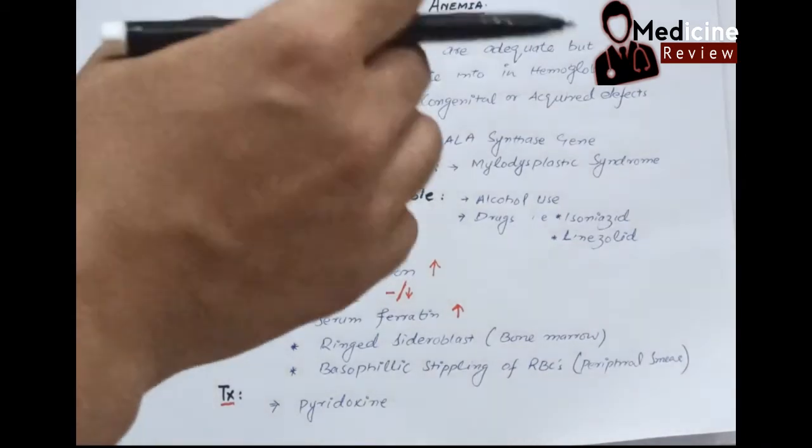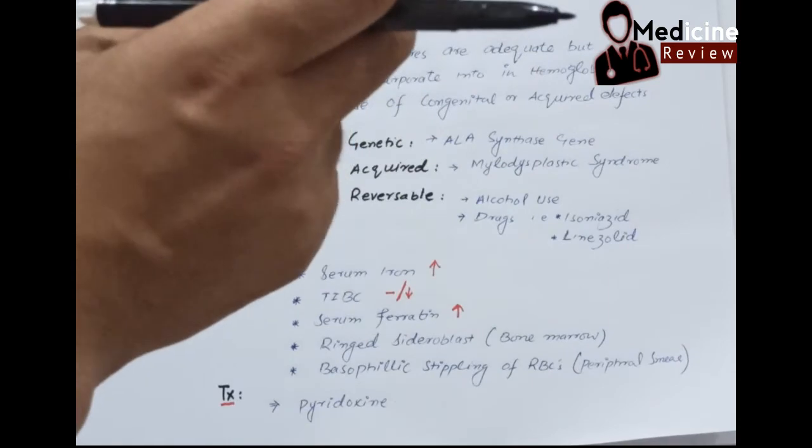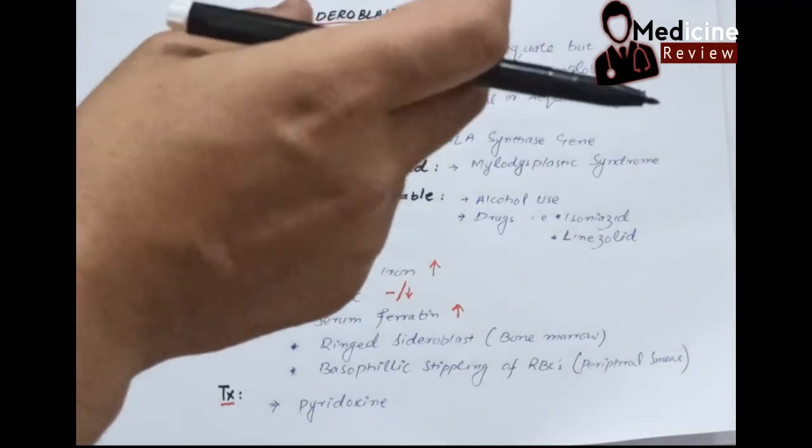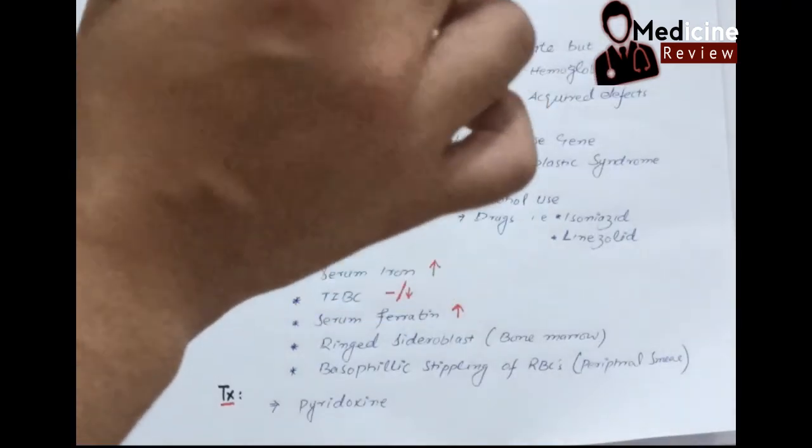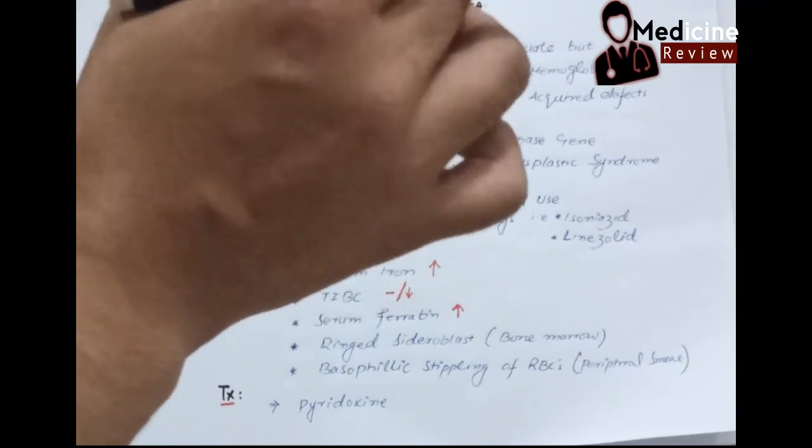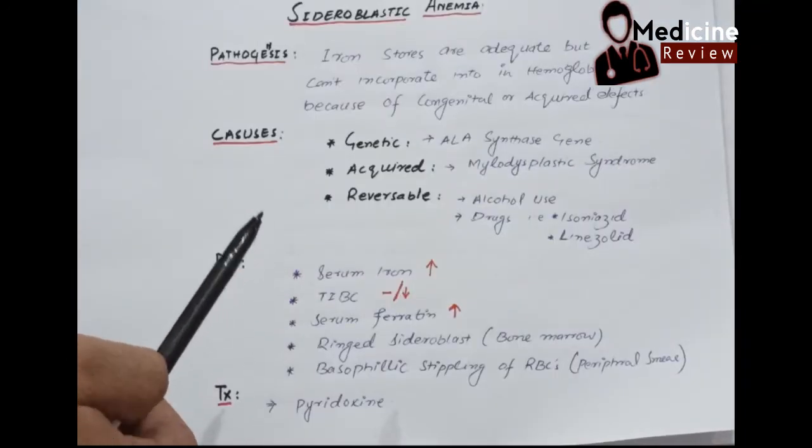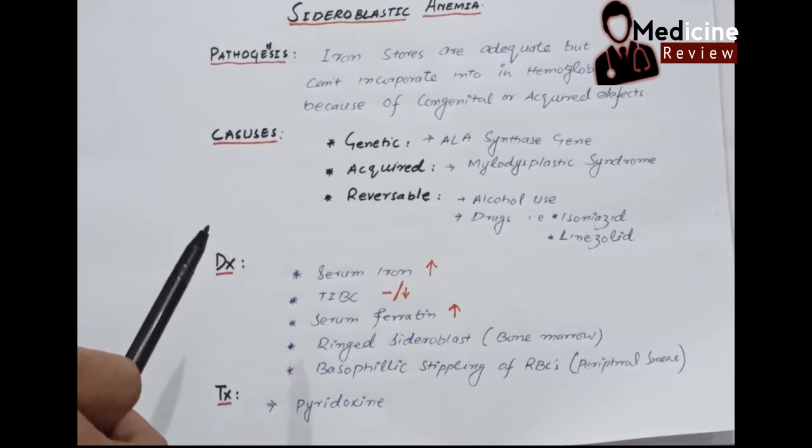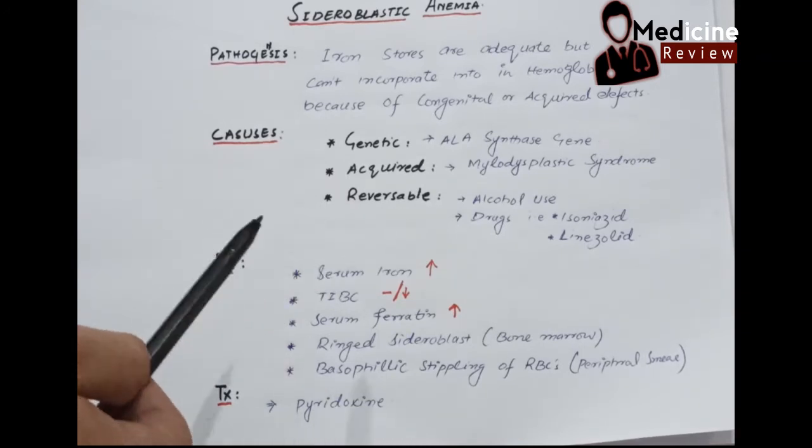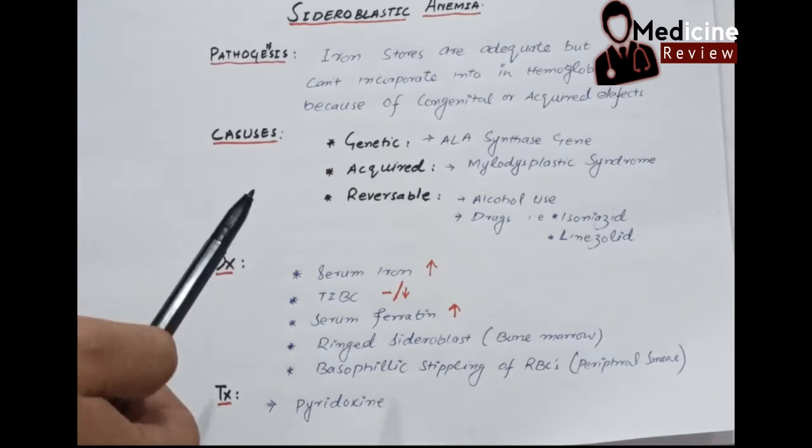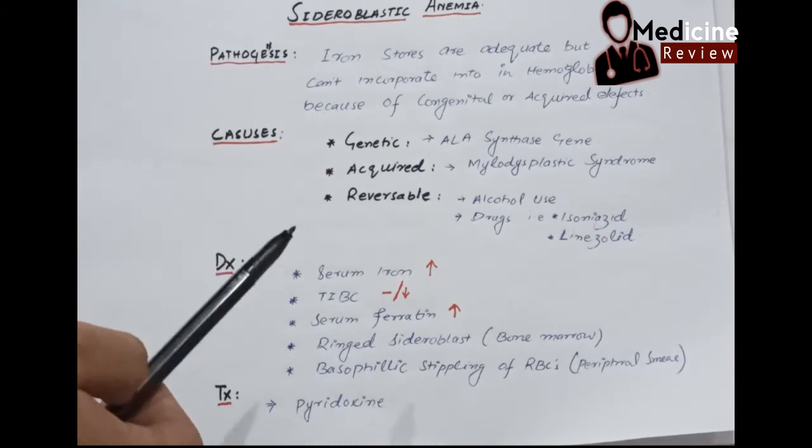Basically, these irons get deposited on the mitochondria of the RBCs in the bone marrow. The clinical symptoms are the same as all the anemias: fatigue, weakness, and different symptoms like we discussed in the earliest videos.